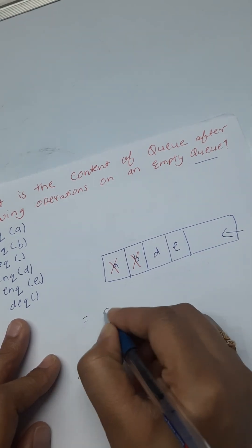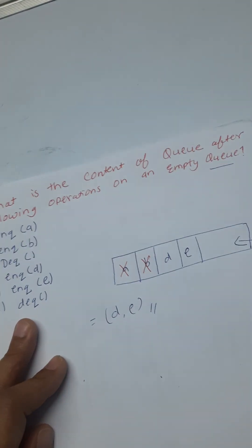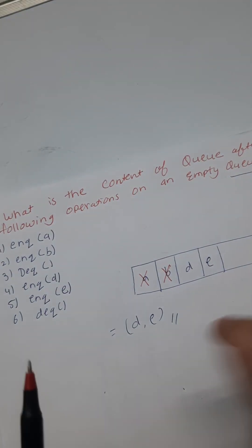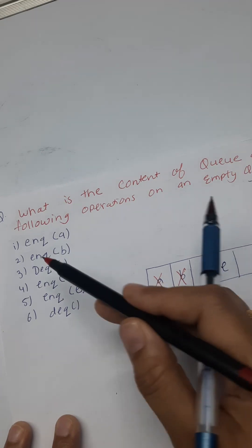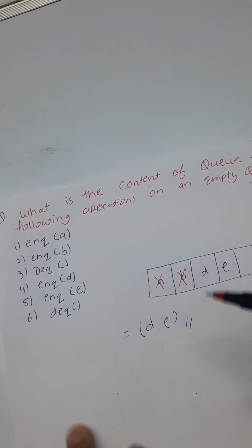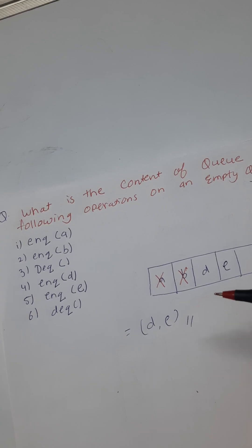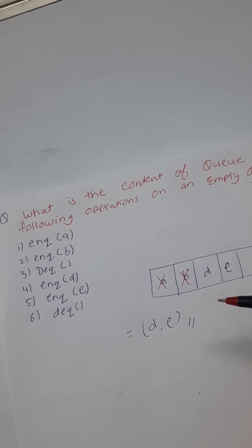Then dequeue again — B is deleted. So what is left in the queue is D and E. This is the final content of the queue. We have seen two operations: enqueue and dequeue. We will stop here and continue in the next class. If you liked the video, please like, share, and subscribe to the channel. Thank you so much, everyone.